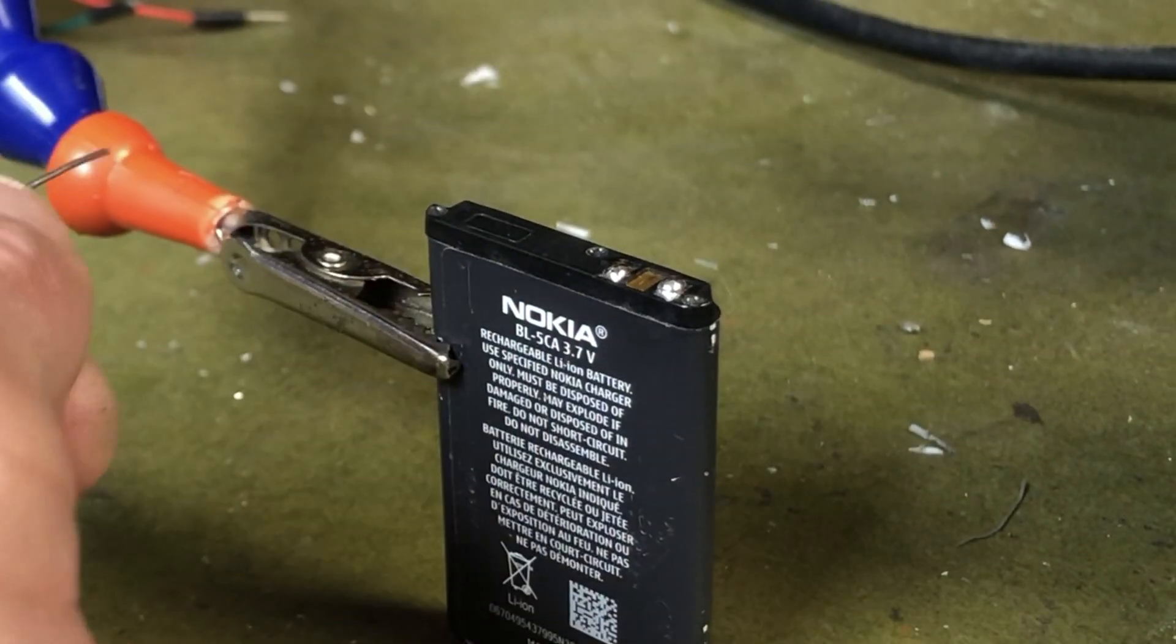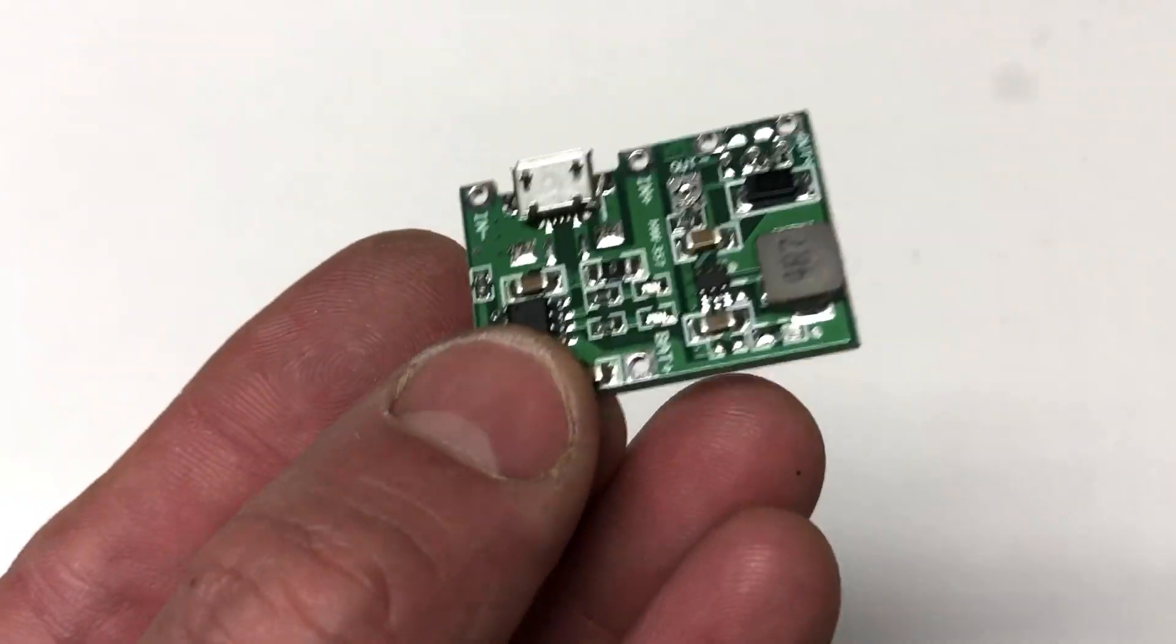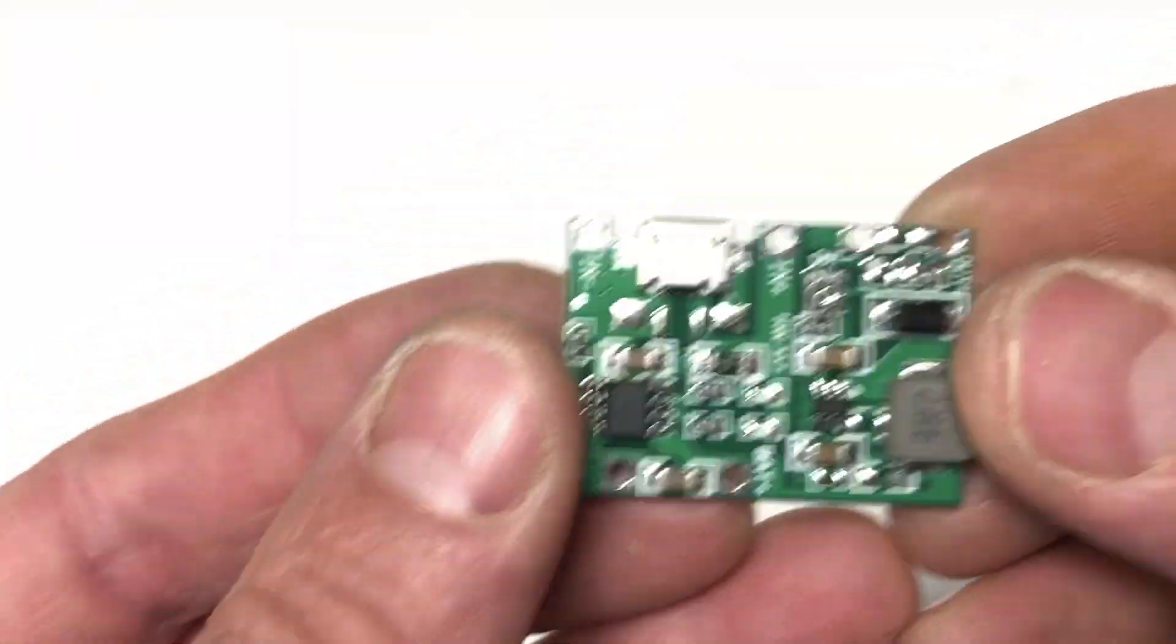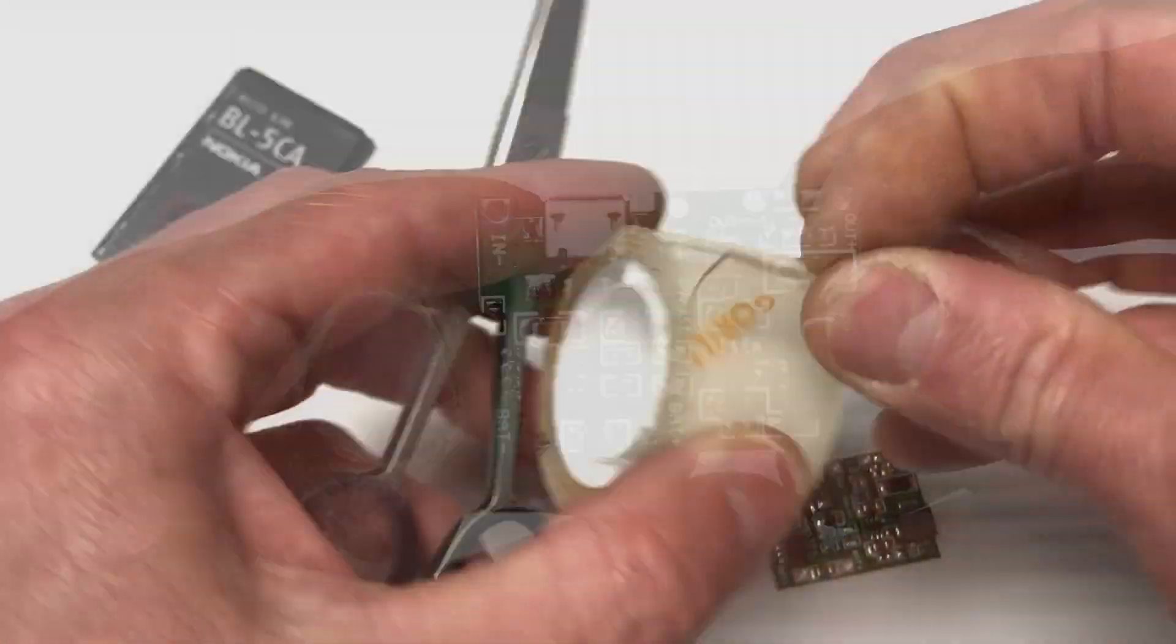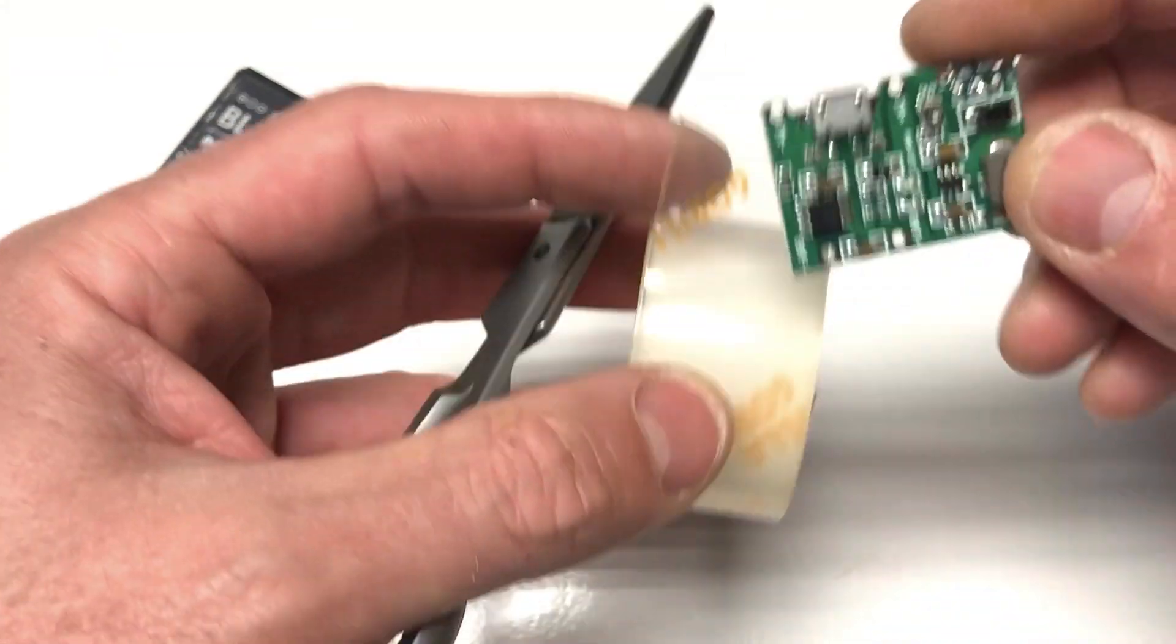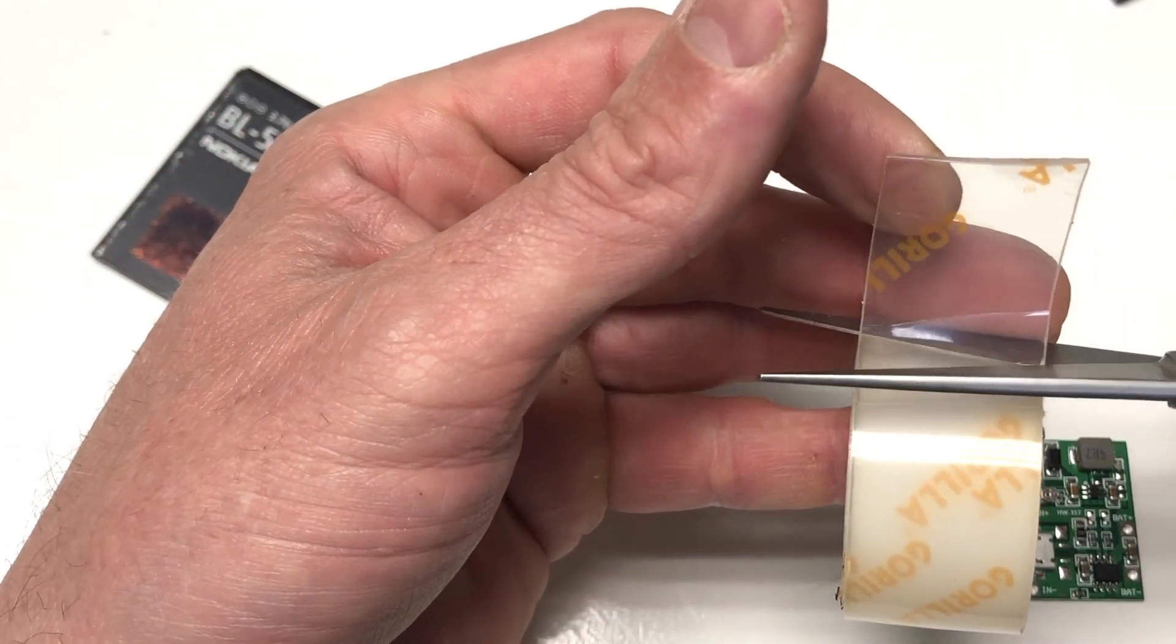This is the module that I use. It has a voltage regulator in it as well as a battery charger. So I stuck this with some double-sided tape to the battery.